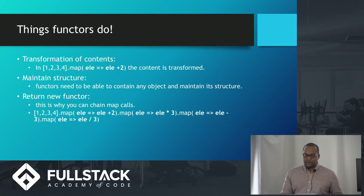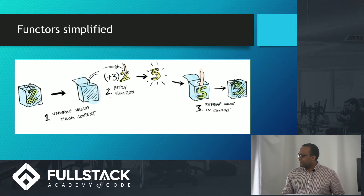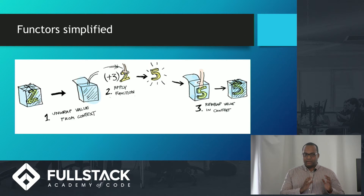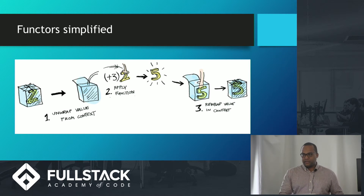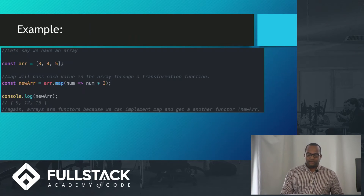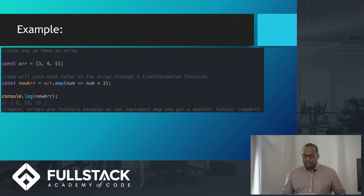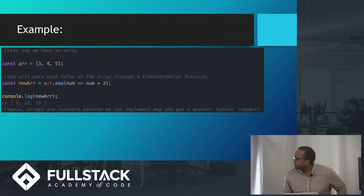To bring it back simply: you have a value wrapped in its context — this could be objects or arrays. You apply map to it. Map takes the value out, applies the function, puts it back into context, and returns you that value in its context. So you can keep mapping it again and again. For example, here's an array — we map it, and the fat arrow function transforms the content into a new array. When we log that new array, we get 9, 12, 15. Nothing crazy, very easy to understand.